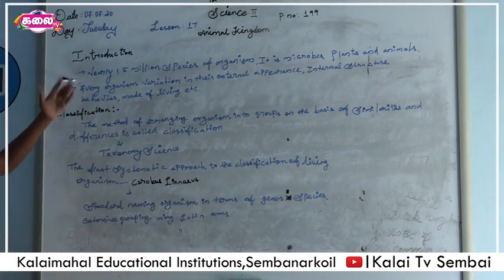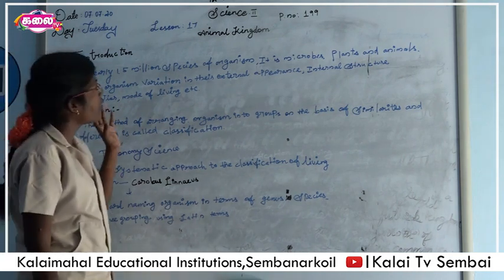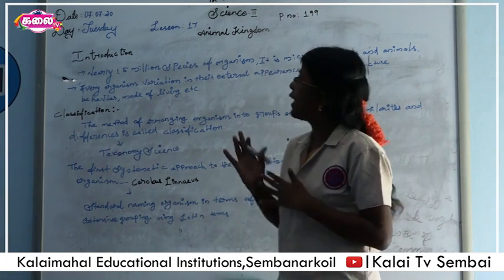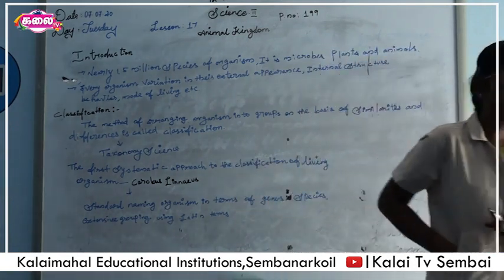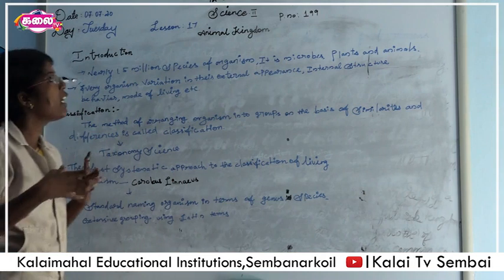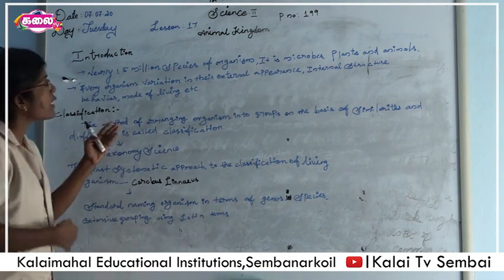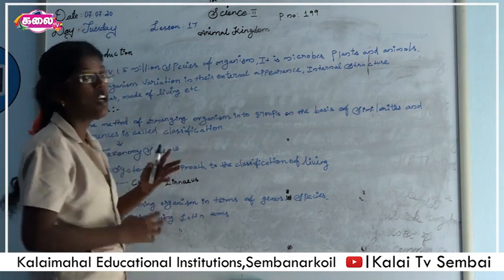We are going to go to Reproduction. Nearly 1.5 million species. We have plant and animals. We are 1.5 million species of organisms. It is microbes, plant and animals.